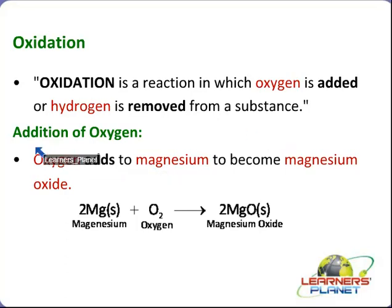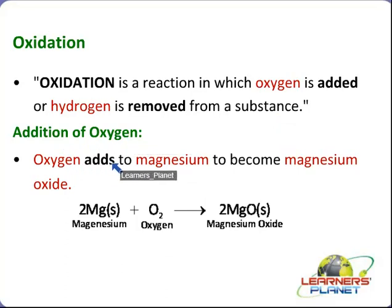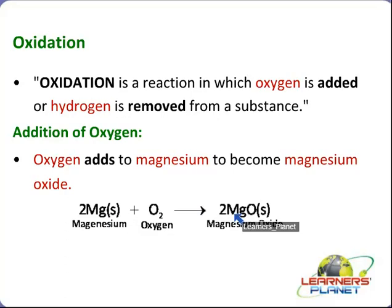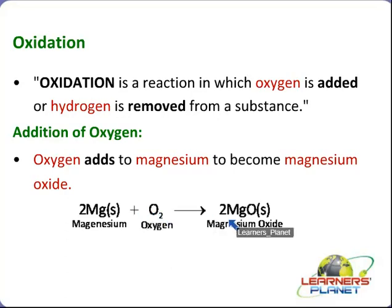Let's take an example of addition of oxygen. Oxygen adds to magnesium to become magnesium oxide. That is, magnesium solid — in our earlier lectures we discussed that when magnesium ribbon is burnt in oxygen, it forms magnesium oxide. What is happening here is that oxygen is added, so this is an oxidation reaction.